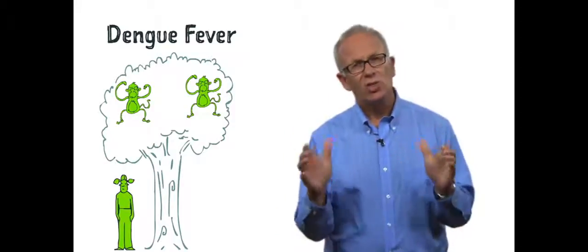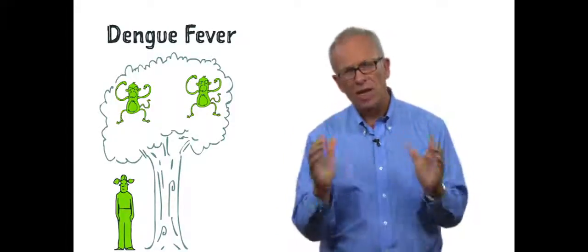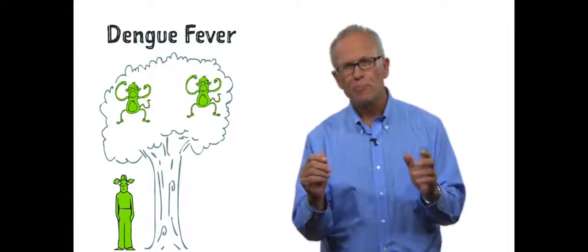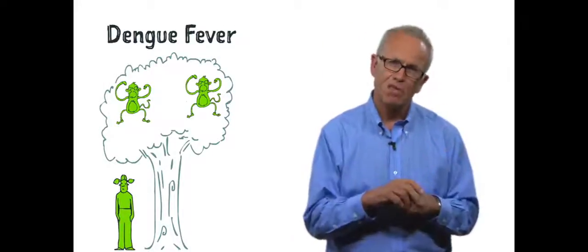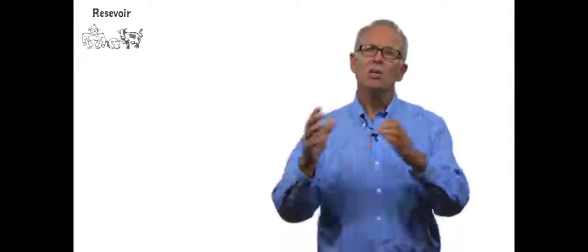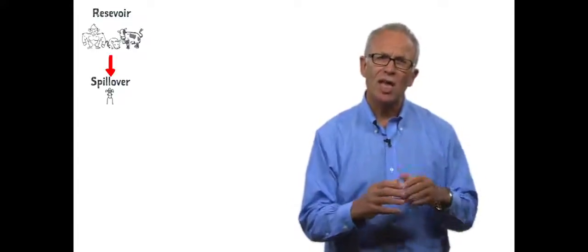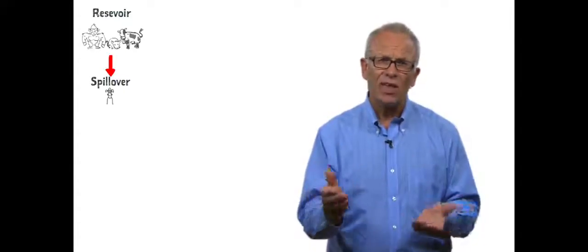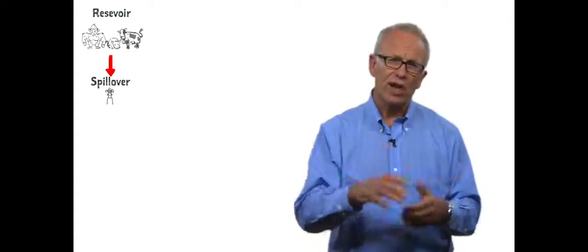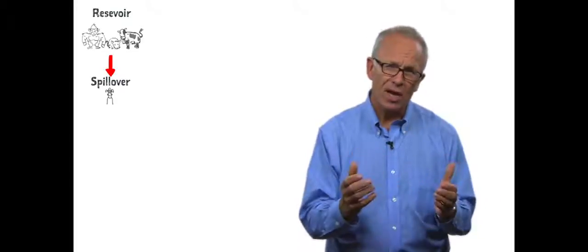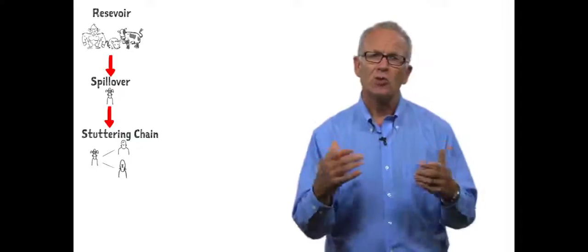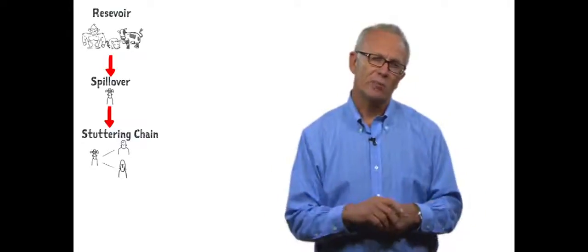Now with these zoonotic diseases, we're looking at a spillover process, a process that involves a series of steps. First, the pathogen must move from the reservoir animal host to the human host. Then once it reaches the human host, it must successfully infect the host and reach the right tissue, multiply, and leave the host so the host sheds the pathogen and is capable of transmitting.